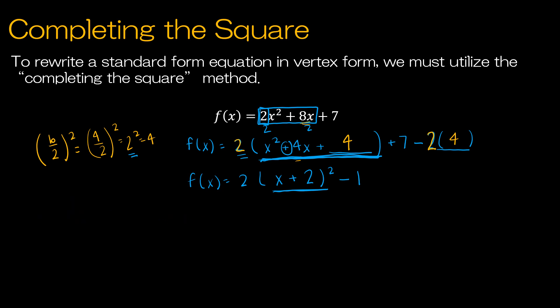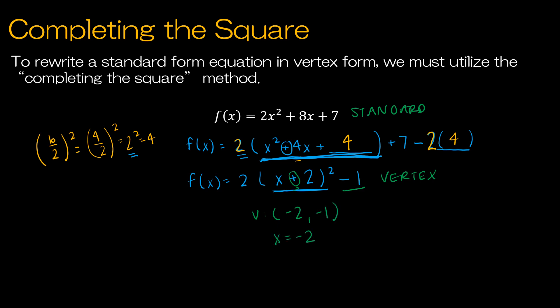Finishing the equation: outside we have +7 and −2×4 = −8, giving −1 outside. So the original standard form equation becomes vertex form: 2(x + 2)² − 1. The vertex is (−2, −1) — remember it's always the opposite sign for h. The axis of symmetry is x = −2. Because the leading coefficient is positive, the parabola opens up, and since it's greater than 1, it's a little skinnier.